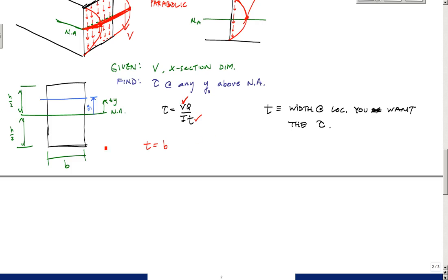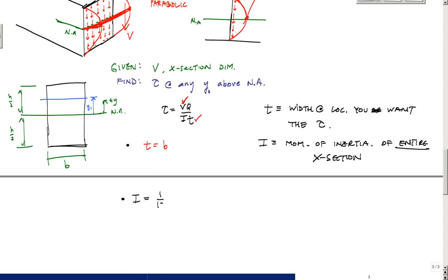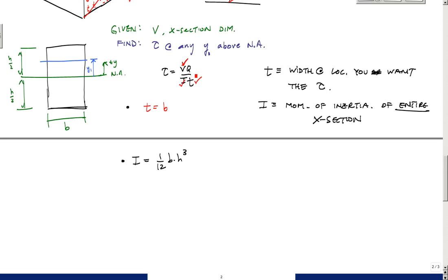And then I is the moment of inertia of the entire cross section. You don't want to just take the area above the cut. So let's calculate these properties. First and foremost, t is equal to b. And here I is just 1/12 base times height cubed. That's easy for a rectangular shape. Now, the last part of this, so now we have I done.